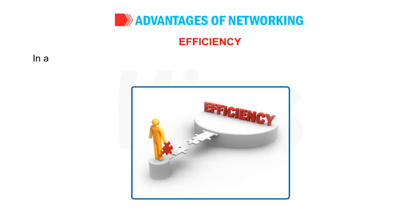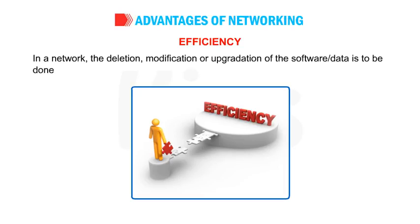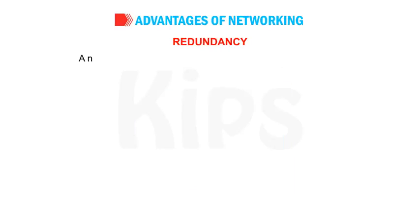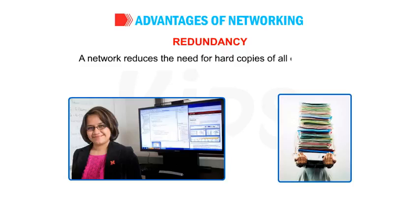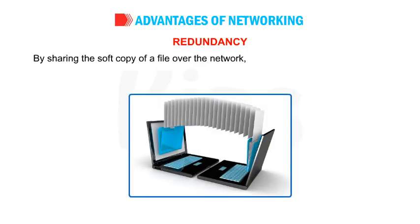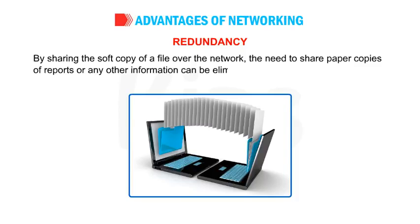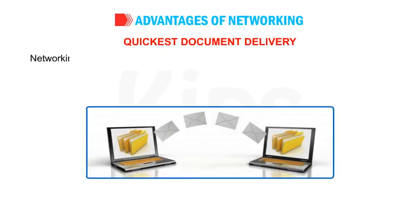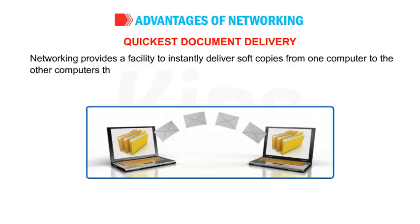Efficiency: In a network, the deletion, modification or upgradation of the software or data is to be done at a single point only. This brings more efficiency and effectiveness into the working system. Redundancy: A network reduces the need for hard copies of all documents. By sharing the soft copy of a file over the network, the need to share paper copies of reports or any other information can be eliminated or greatly reduced. Quickest Document Delivery: Networking provides a facility to instantly deliver soft copies from one computer to other computers throughout the world.